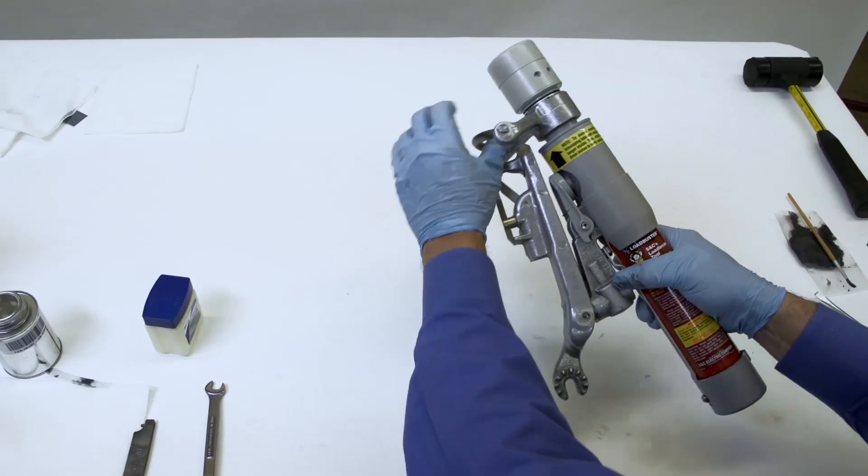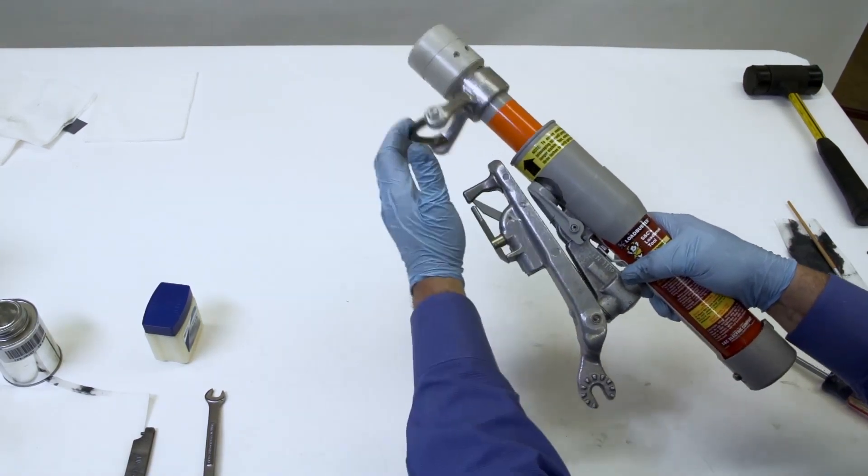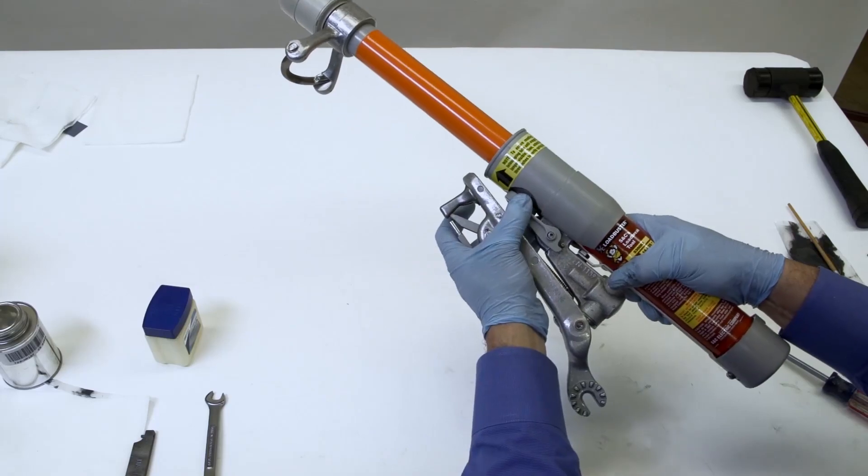It's important to operate the tool several times to make sure that the trigger and resetting latch perform properly. Optionally, with a force gauge, check that the trip force is between 20 and 27 pounds for Loadbuster model 5300R3 and 20 to 29 pounds for model 5400R3.